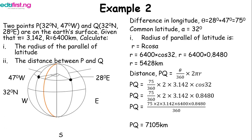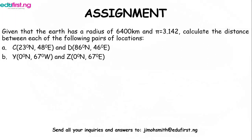Having done these two examples, you are now set to do a short assignment. Given that the earth has a radius of 6400 km and pi = 3.142, calculate the distance between the following pairs of locations. (a) Location C is 23 degree north and 48 degree east; location D is 86 degree north and 46 degree east. (b) Location Y is 0 degree, and location Z is 67 degree north and 67 degree east. Thank you for your time.